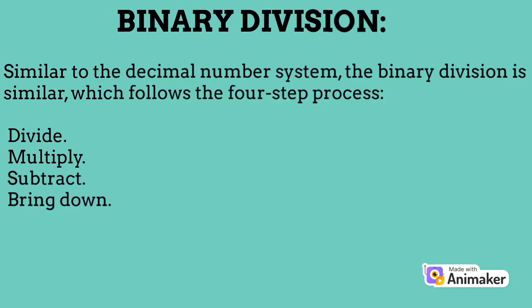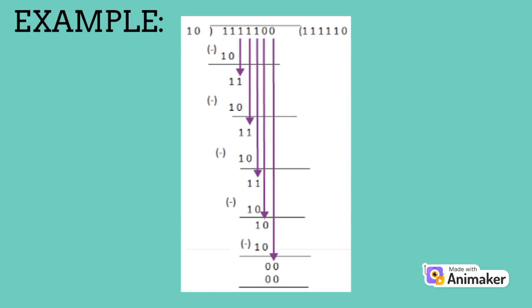Binary division. Similar to the decimal number system, binary division follows a four-step process: divide, multiply, subtract, bring down. Here is an example of binary division.